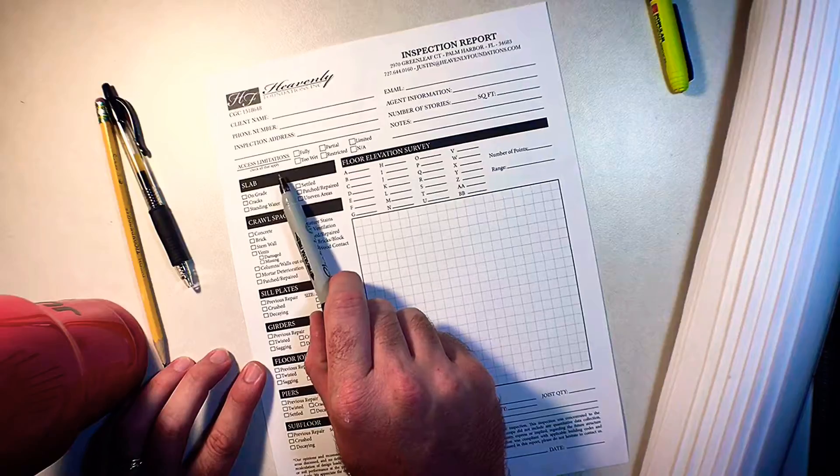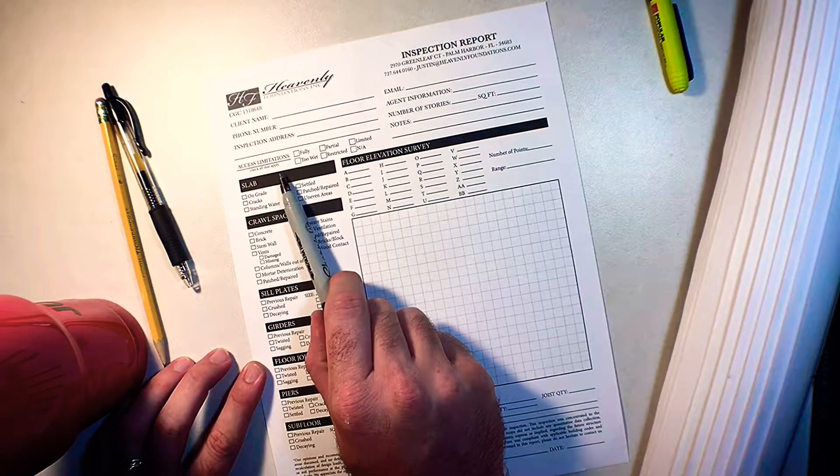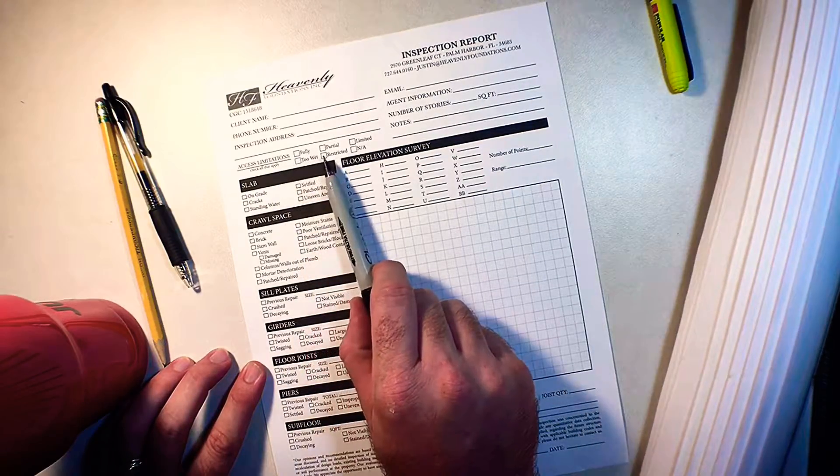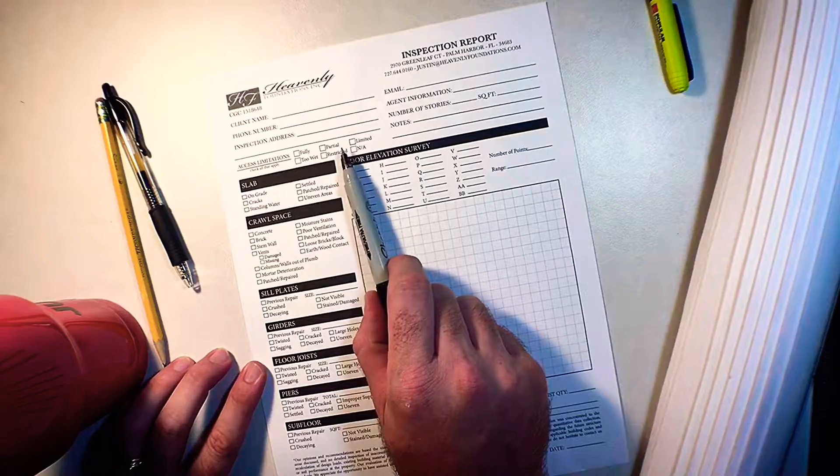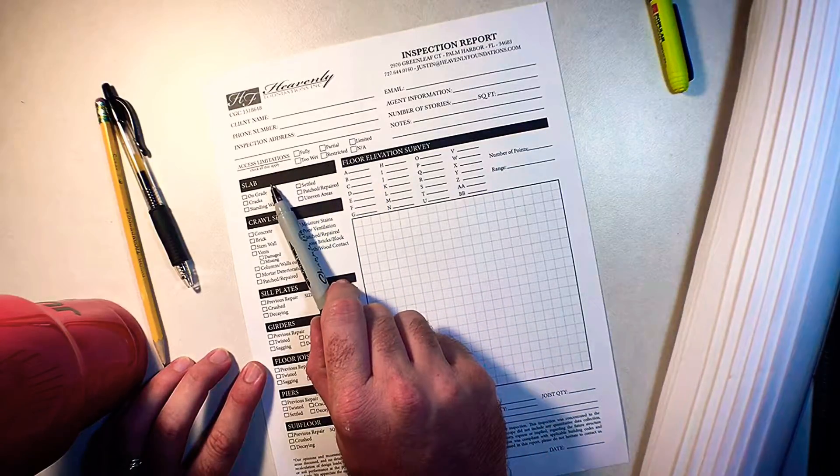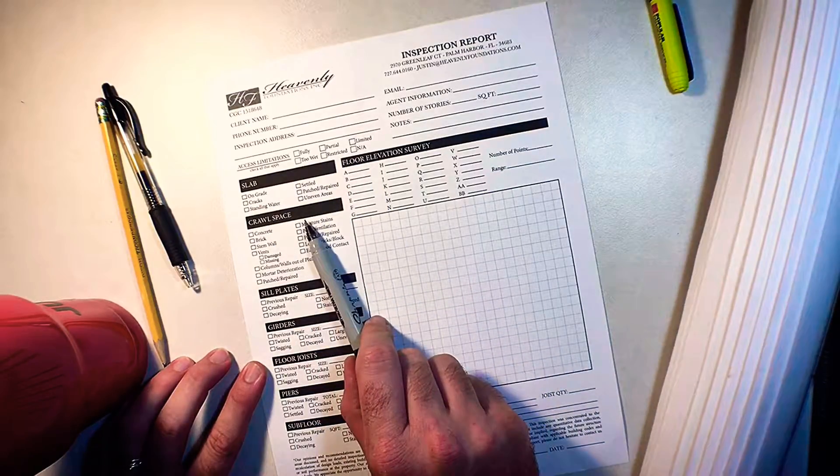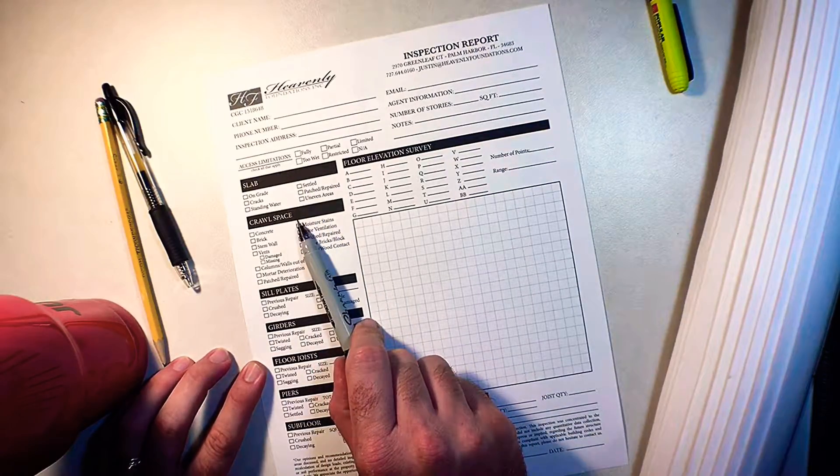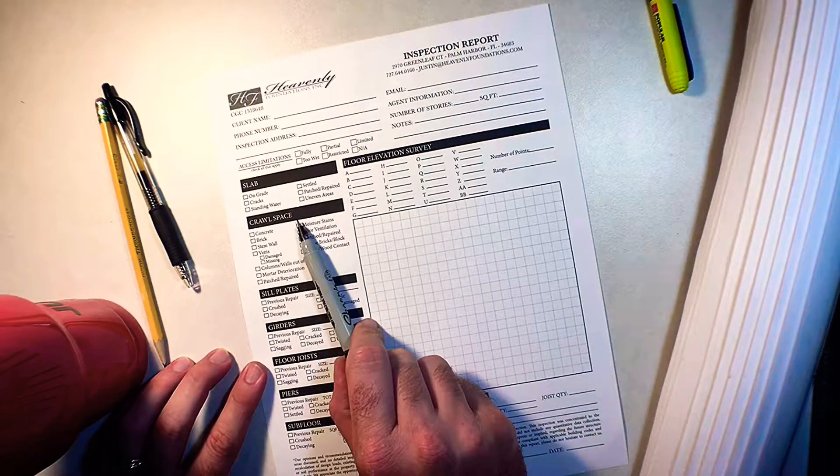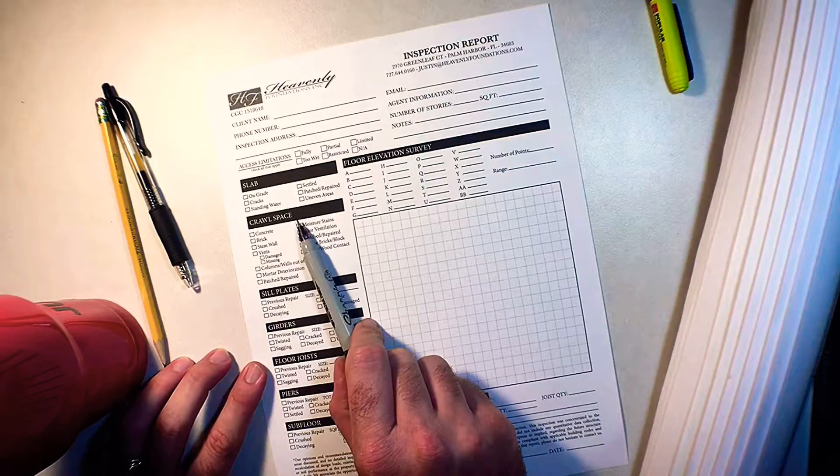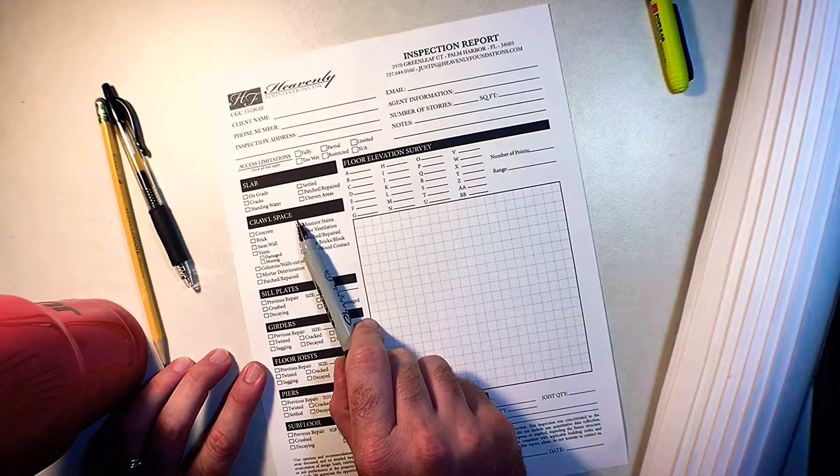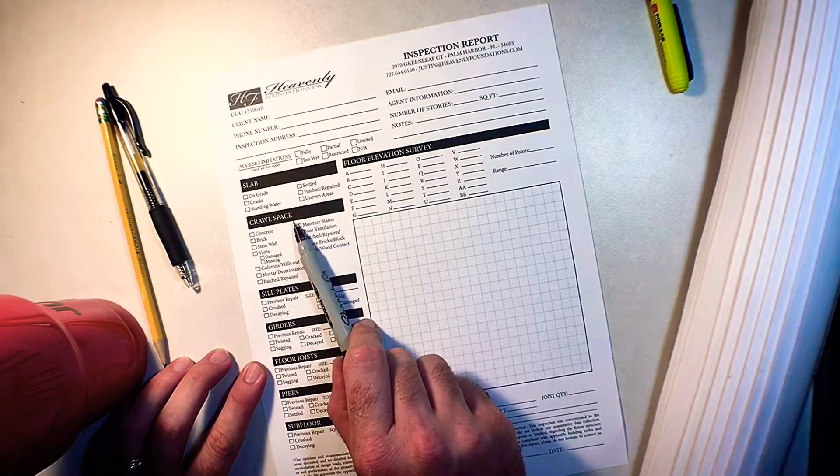We get into the access limitations of your property. Was it fully accessible, restricted, or partial? Then from there we get into is it slab on grade or is it crawl space? If you don't know what your property is, we shot a video that's on YouTube and you can also check out our Facebook page for that quick video there and it will tell you exactly if it's slab or crawl space.